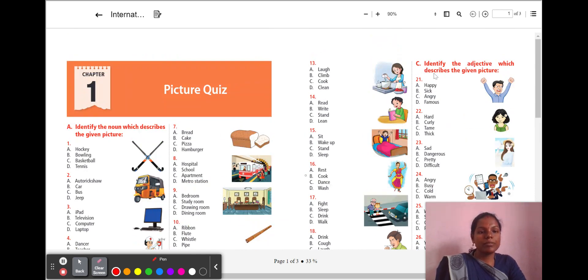Next, move to the C section. Identify the adjective which describes the given picture. What do you mean by adjective? Adjective in the sense, describing word. It describes a noun. So, look at this man. How does he look? Is he happy or sick or angry or famous? What is the mood his face shows us? He is angry. So, angry is your right adjective word for the given picture.